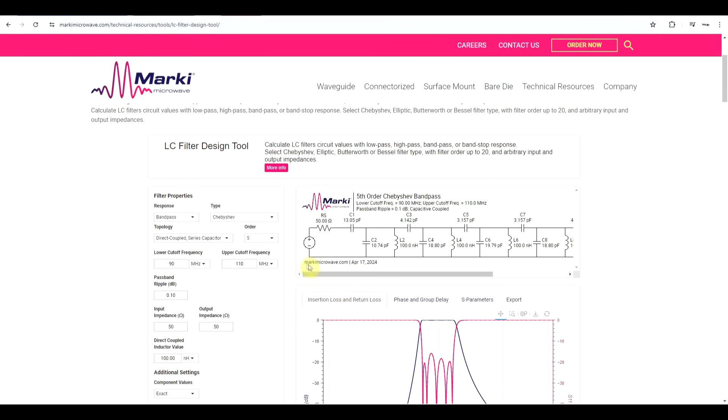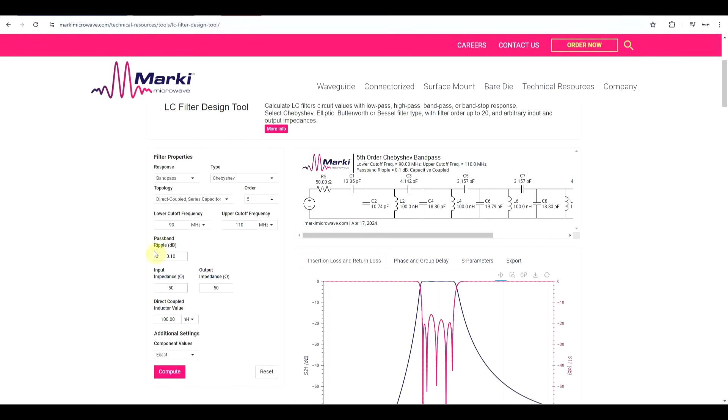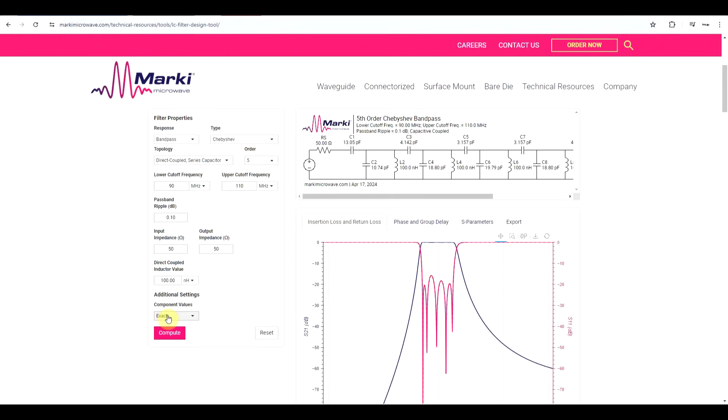This is a free online tool that allows you to design all four major types of filter, so your low pass, high pass, band pass and band stop, and you can also choose the exact response type. There are six variants here to choose from. And you can also select the exact filter topology that you are interested in, as well as the filter order. Finally, there are some settings regarding the exact frequencies of interest, as well as various other settings like pass band ripple for the Chebyshev, input and output impedance, certain component related limitations, and the components can be either with exact values or coming from standardized sets.